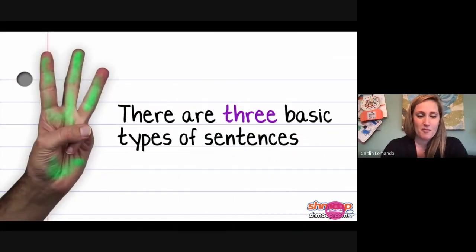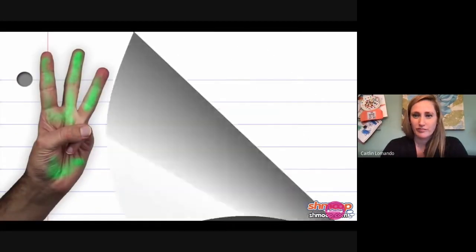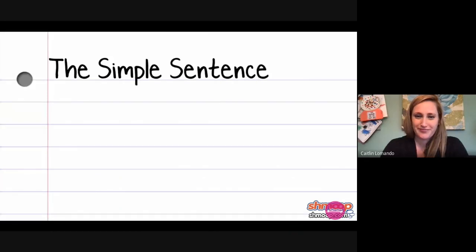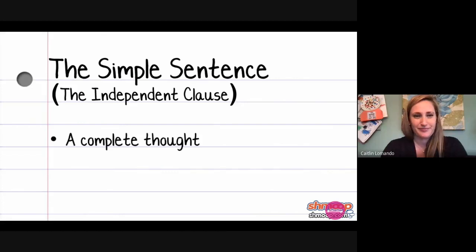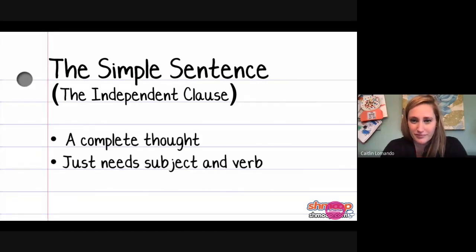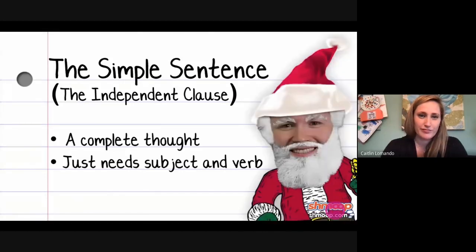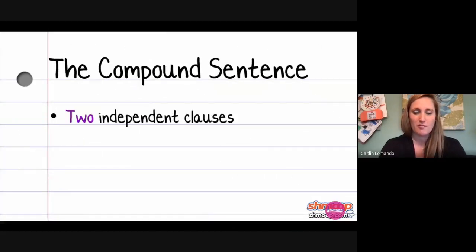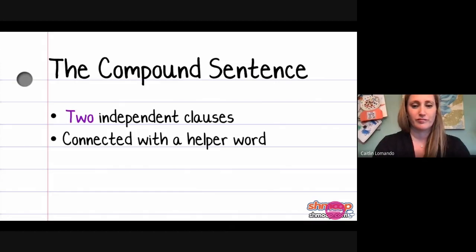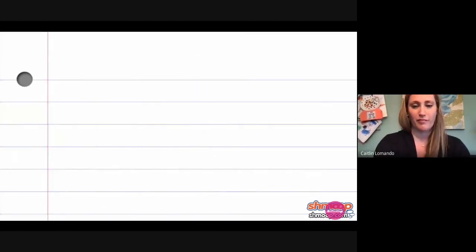There are three basic types of sentences. First, the simple sentence, also known as the independent clause. You can also think of it as a complete thought. So long as it's got a subject and a verb, you're all set. The other two types use different helper words to connect clauses. Compound sentences have two independent clauses connected with a helper word, such as and, nor, or so.